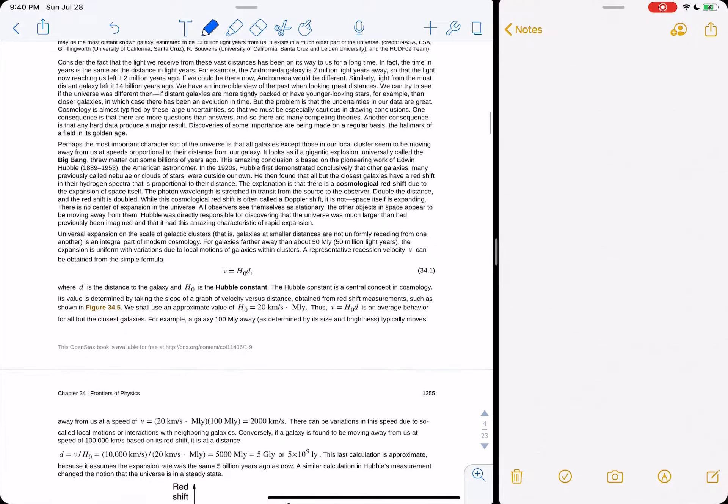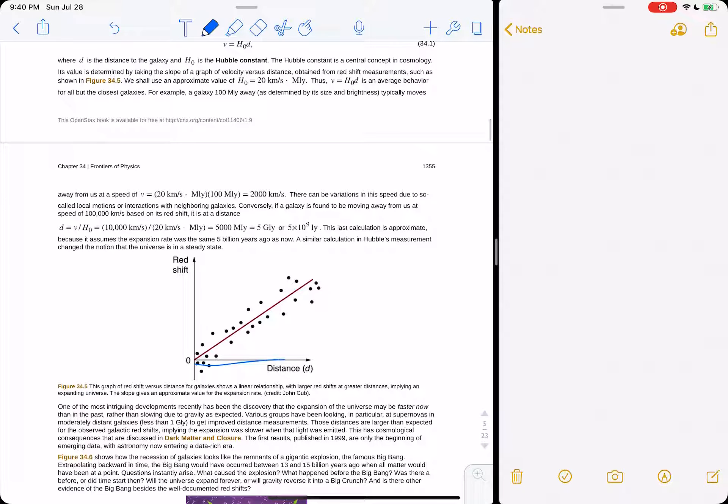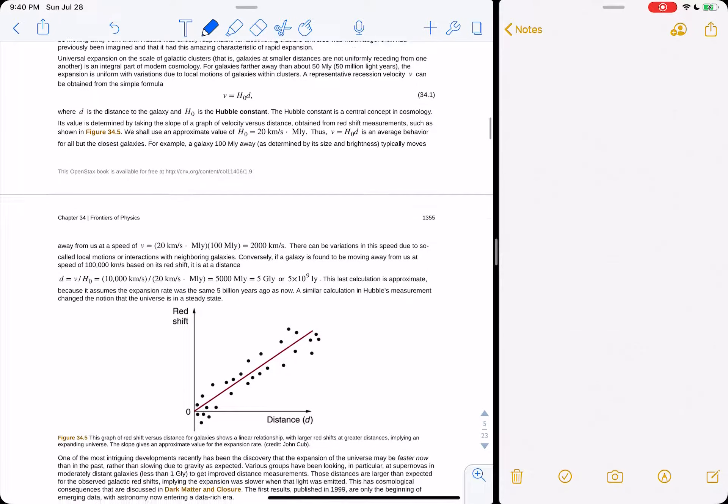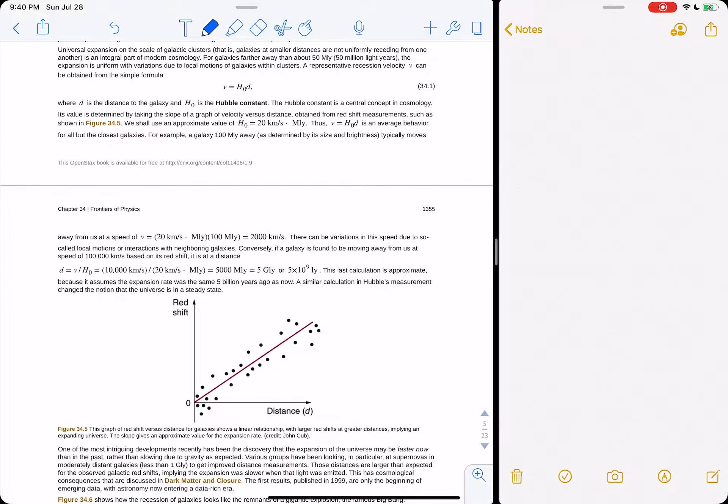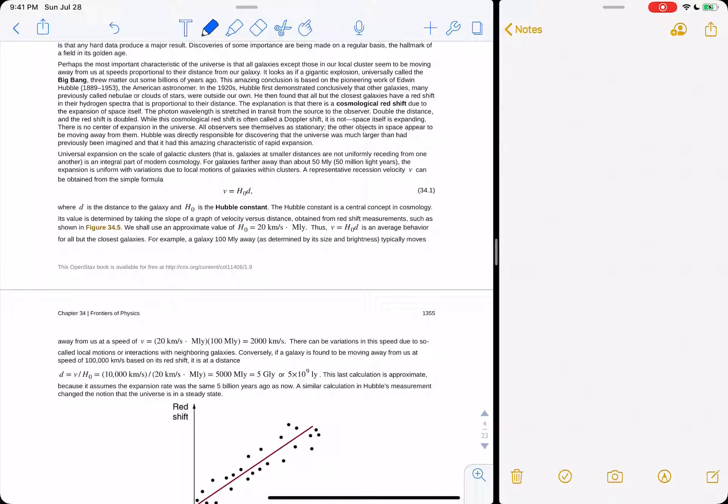Hubble noticed that the further away a galaxy was, the faster it was moving away from us. And when he started plotting those on a graph, he realized, he noticed this relationship that literally the further it was, the faster away it was moving from us. And so the implication being that the universe is expanding, that these galaxies were closer to us at a time a long time ago. And if you just take the slope of this line, that's called the Hubble constant.